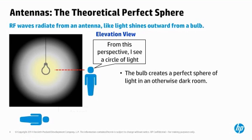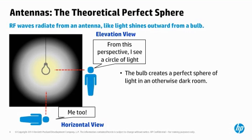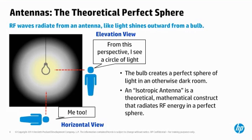If you were to lie down under the light and look up, you would perceive the horizontal view. This, too, would be a perfect circle. An RF antenna that radiates RF energy equally in all directions is called an isotropic antenna. Since the antenna radiates equally in all directions, it does not focus energy in any particular direction. Humans cannot make such a device, but we use this theoretical construct as a standard against which to measure the performance of actual, real-world antennas.